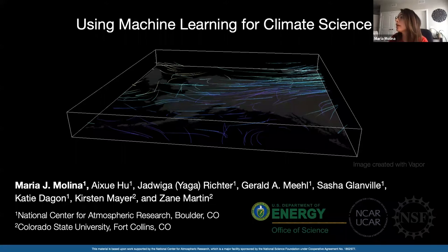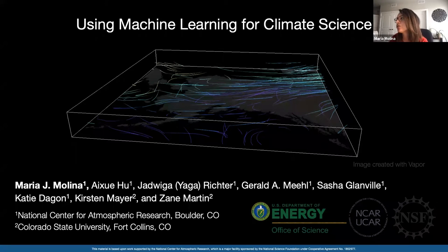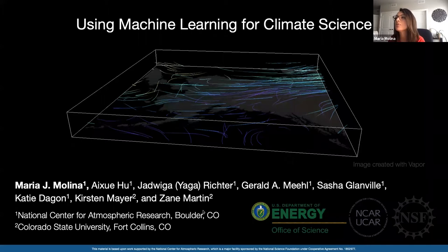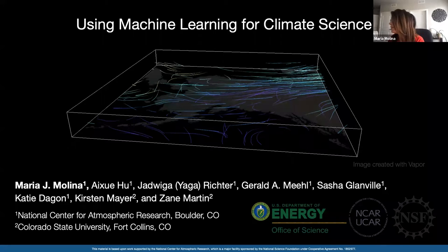The work I'm sharing with you today is funded by the US Department of Energy. A key component of the work lies in using machine learning to understand the predictability of large-scale climate patterns and modes of variability. I'd like to acknowledge my co-authors, which include other scientists at NCAR — the National Center for Atmospheric Research — as well as several students currently enrolled at Colorado State University, and one postdoc, Zane.